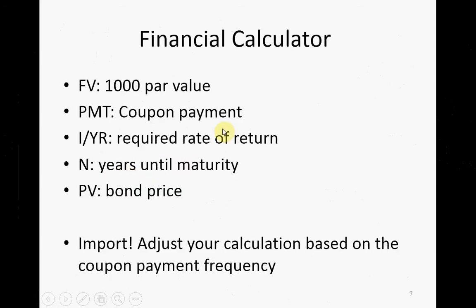On the financial calculator, the factors you input are: future value = $1,000; payment = your coupon payment per period (not per year, but per period); I = required return; N = periods until maturity; and present value = bond price. Of course, you have to adjust your calculation based on coupon payment frequency. If the coupon is made twice a year, divide the annual required return by two and multiply the years by two.